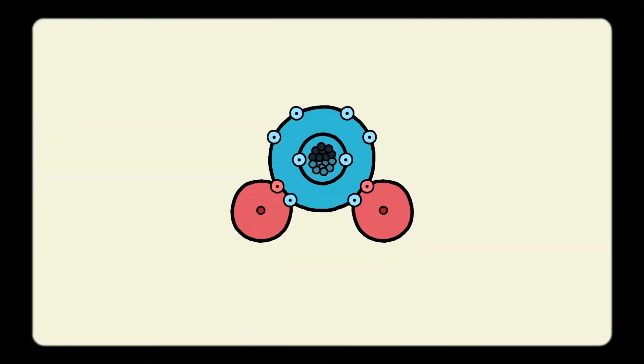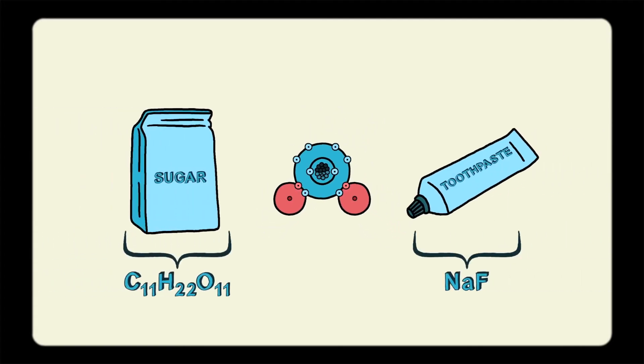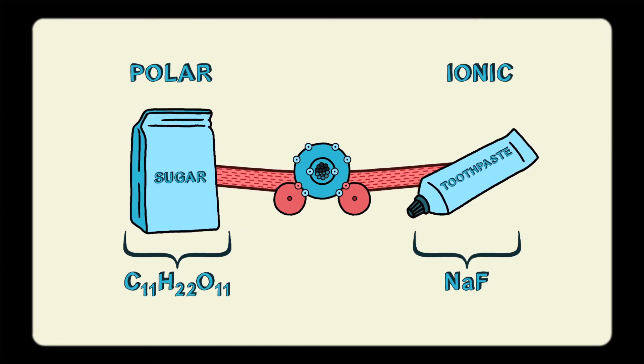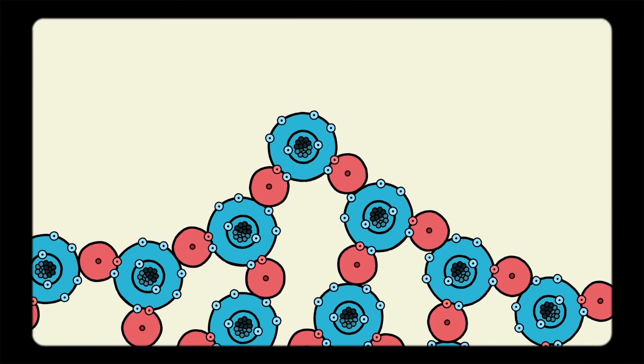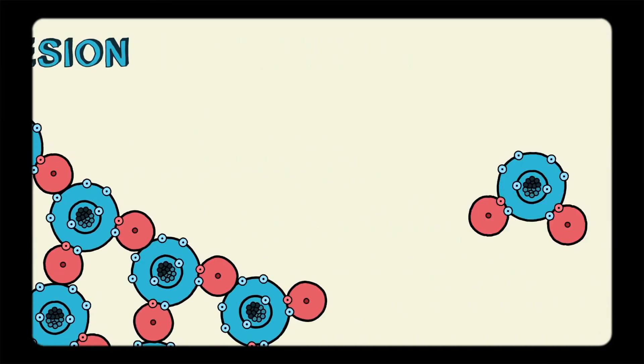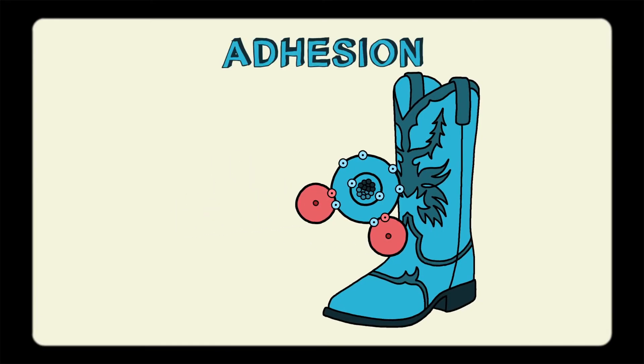Hydrogen bonds don't just happen in water either. They can form between a water molecule and different substances that are polar or ionic. Water's ability to stick to itself is called cohesion, while water's ability to stick to other substances is called adhesion.